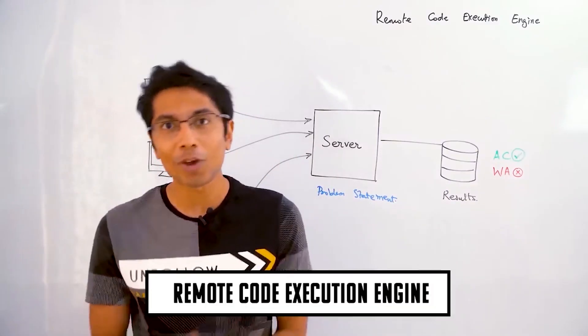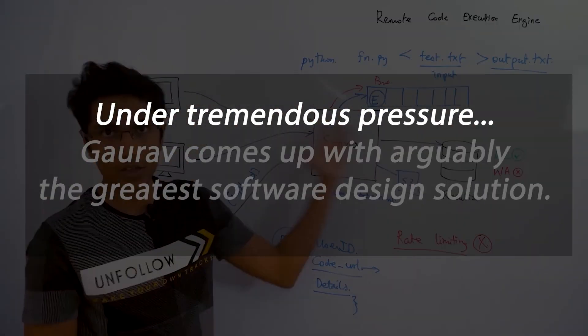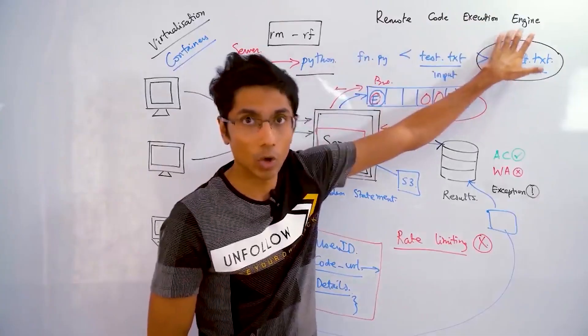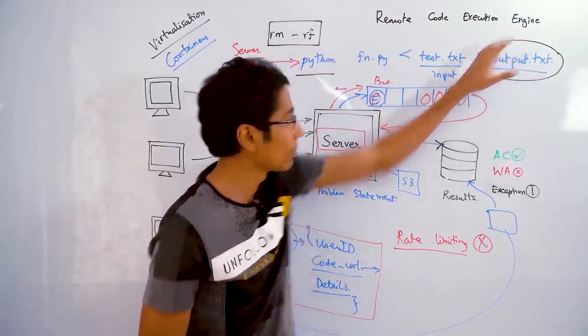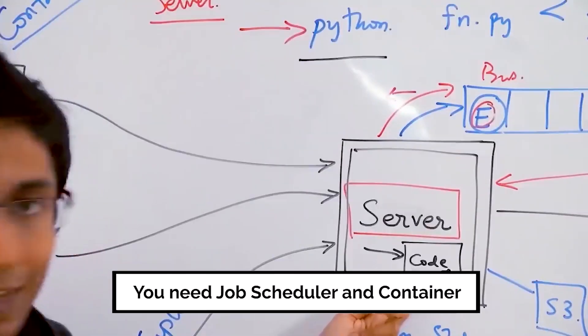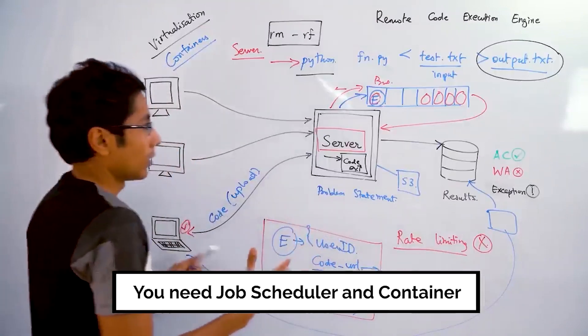Hi everyone, this is GKCS. Today we are talking about a remote code execution engine. The core problem, the absolute core problem is that you need a job scheduler so that you don't overload your services. You need a container so you don't overload your services and there is security and that's it.